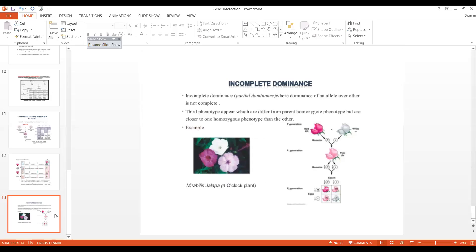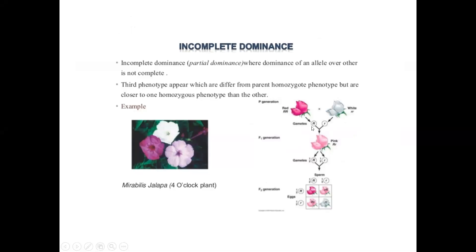Summarizing incomplete dominance: at the third generation we get one red color, two pink color, and one white color. The red color is dominant over white, but the red color is not fully expressed, so an intermediate pink color is expressed. This phenomenon of not fully expressing the dominant gene is known as incomplete dominance, and with this, the topic of gene interaction ends.